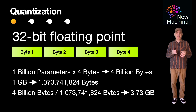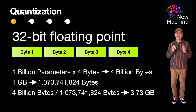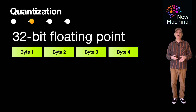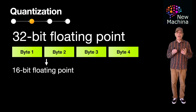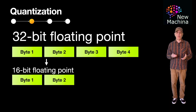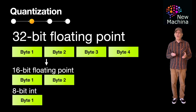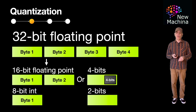So now, with this quick introduction to neural networks, parameters, and how they're typically represented as 32-bit floating point values, let's now define quantization. LLM quantization is the process of reducing the precision of the numerical values — typically floating point values — representing the weights and possibly other parameters in the model to lower bit representations. For example, a 32-bit floating point value can be saved as a 16-bit floating point value, or even an 8-bit integer, a 4-bit value, or even a 2-bit value.